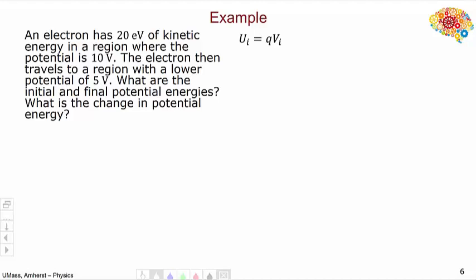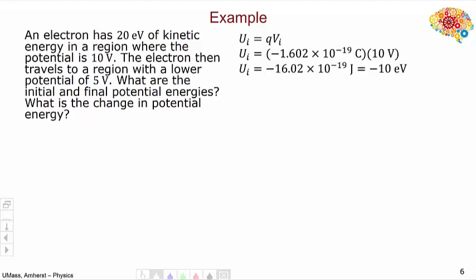Let's begin by looking at the initial potential energy: U = QV. We know the charge of the electron is −1.602 × 10⁻¹⁹ coulombs, and our initial potential is 10 volts. So the initial potential energy will be −16.02 × 10⁻¹⁹ joules, or converting that to eV, −10 eV.